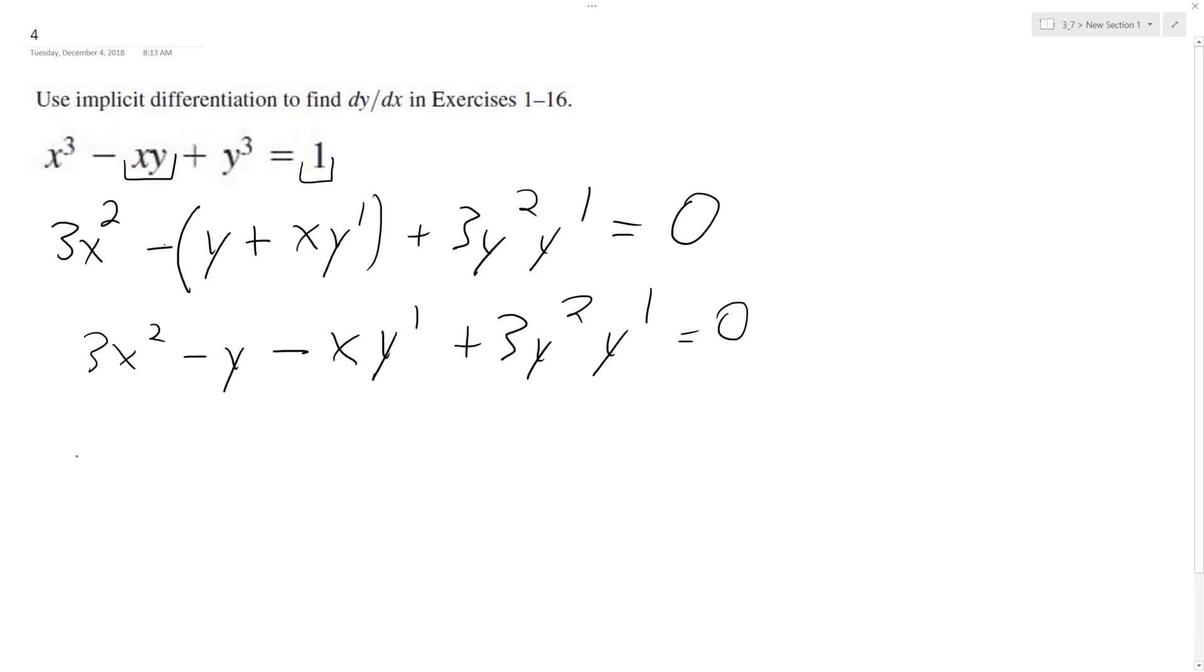Alright, separate the x and y terms, so 3y squared y prime minus xy prime equals, negative 3, actually, I get plus y minus 3x squared, I move these terms over, and this is what I have still over on the left side.